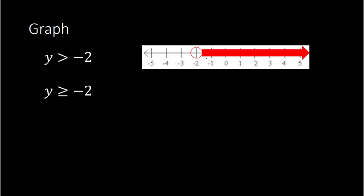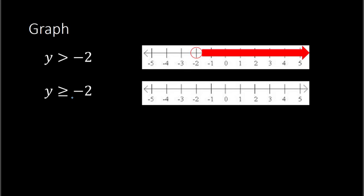If you had the same thing but now you have greater than or equal to negative 2, once again we're shading in all the possible solutions. Anything bigger than negative 2 I shade in, but also negative 2 would be a solution because it could be equal to negative 2. So I shade in all the solutions, and since negative 2 is a solution I shade in negative 2. I have a circle but I shade in that circle — a closed circle — starting at negative 2, and the arrow shows the direction my answers will be in.